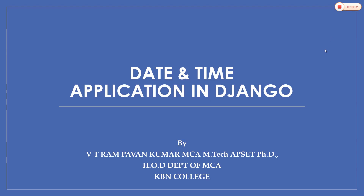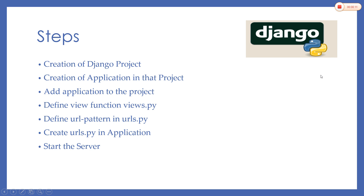Good afternoon one and all. In this session we are going to learn about how to create a date and time application in Django. The steps involved are: creation of a Django project, creation of an application in the project, adding our application name in settings.py, defining the view function and URL pattern, creating a separate urls.py file in our application, and finally starting the server.